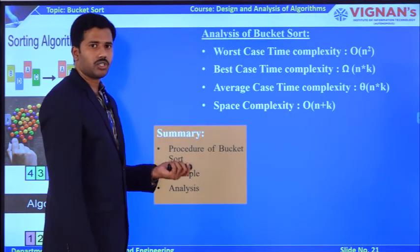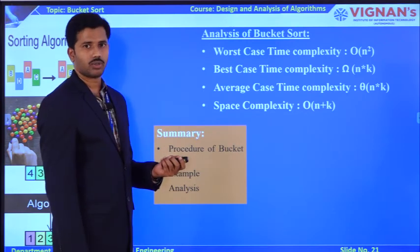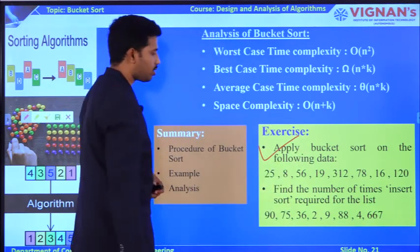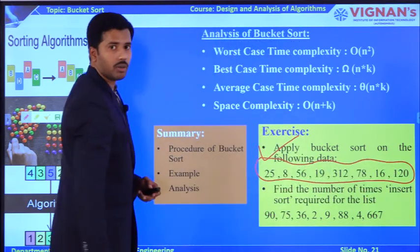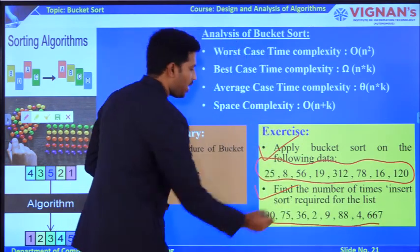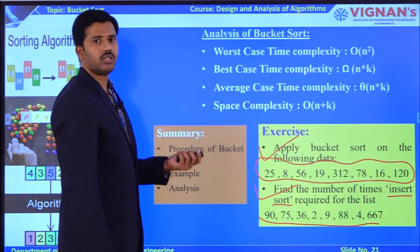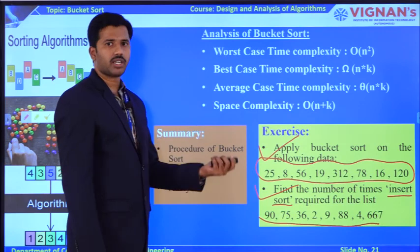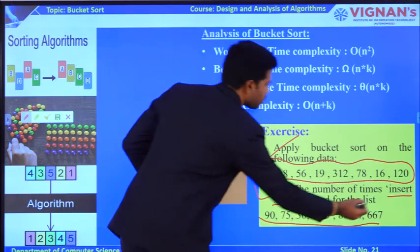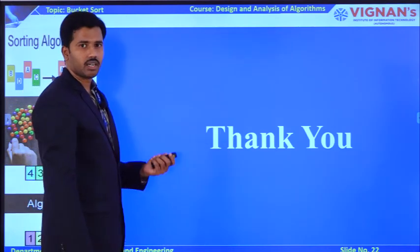We have now seen the procedure of bucket sort, one example of converting an unsorted array to sorted manner, and the analysis. Now take these two questions as an assignment. In the first question, apply bucket sort to convert the given input array into sorted manner. In the second question, find out how many times the insertion sort algorithm is required. Thank you, that is the end of this lecture.